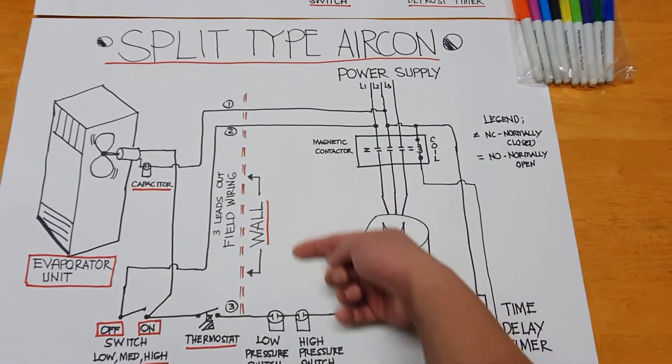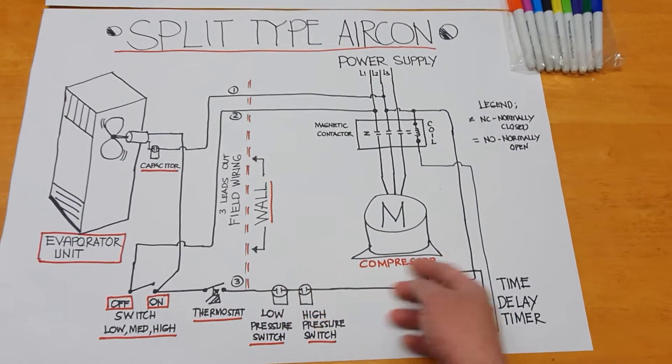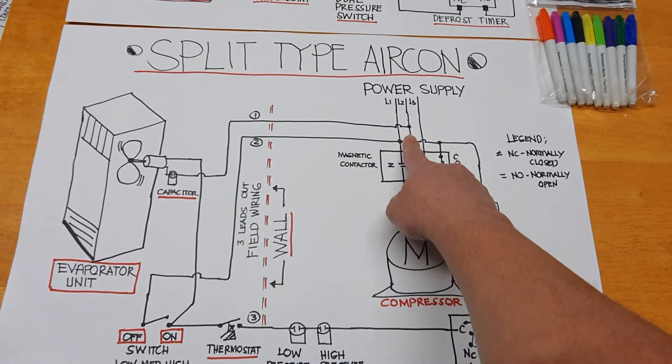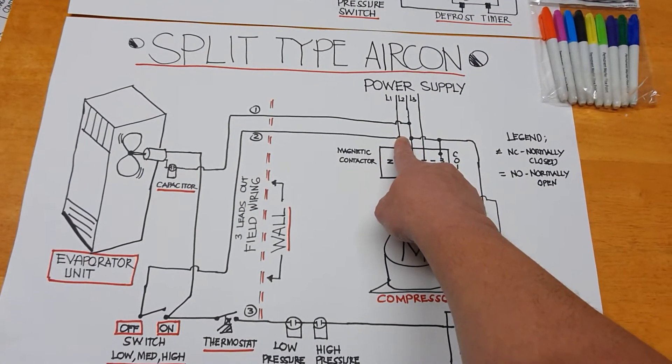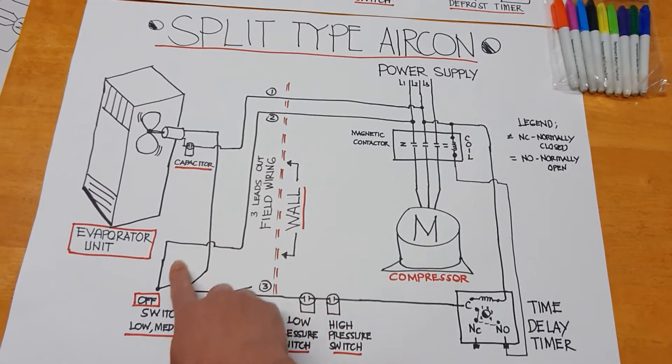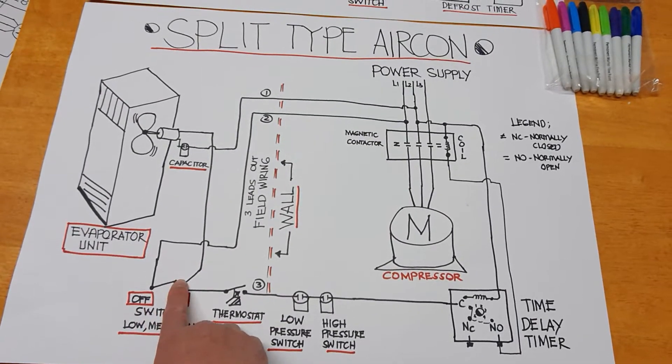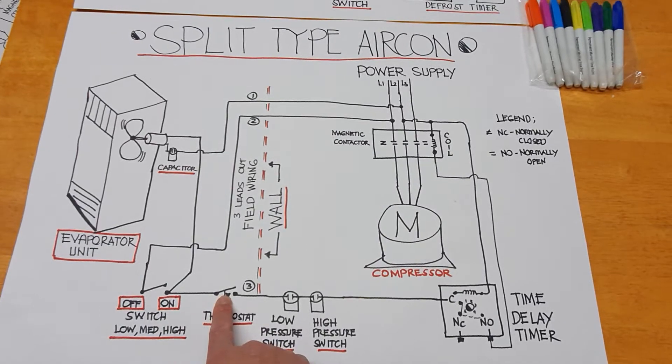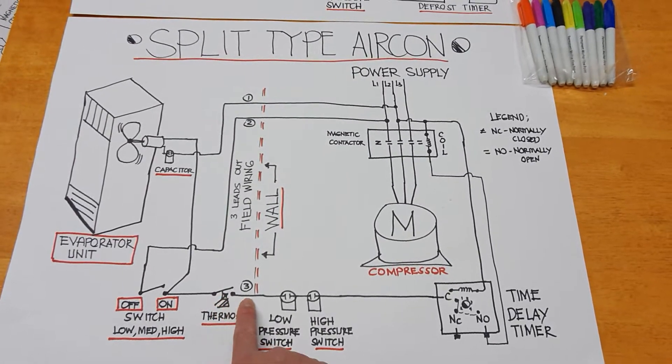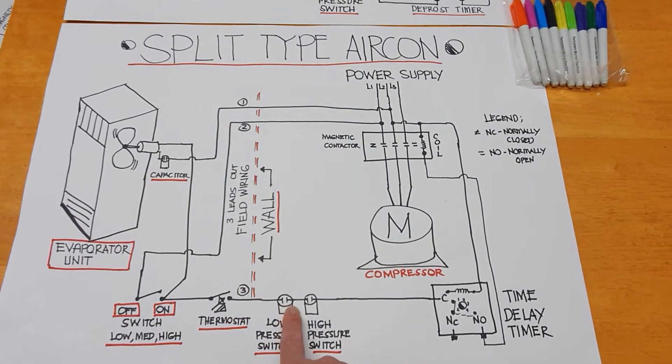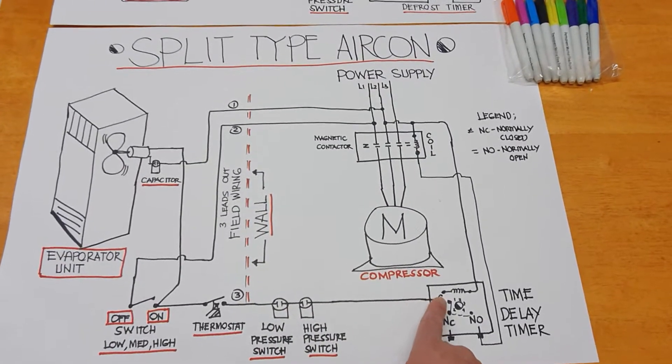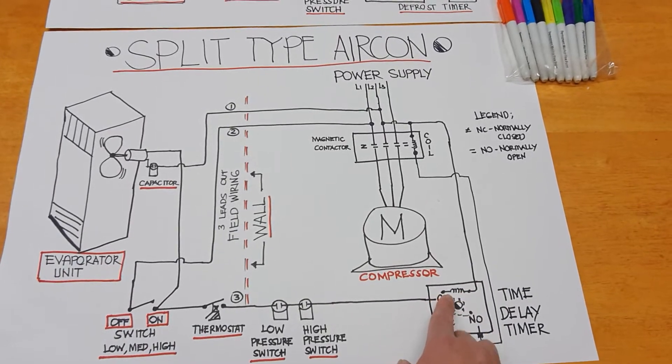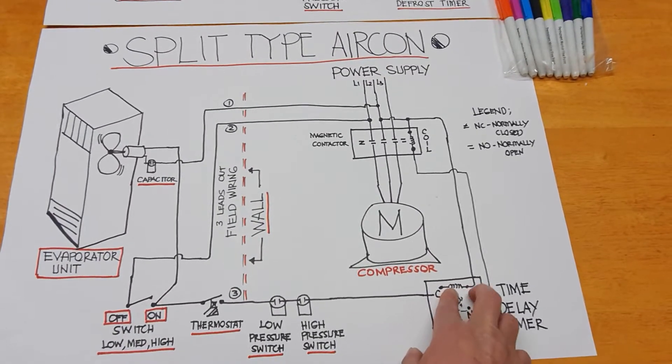So this is the connection I will explain it to you. Now line one will go to the switch. When you turn this on, the power will go straight here through the thermostat, low pressure switch, high pressure switch, and then it will go to the commons of time delay timer. So this is the coil of the time delay timer once supplied.